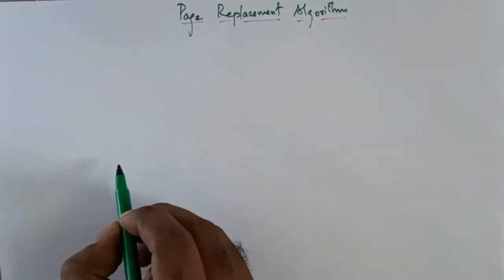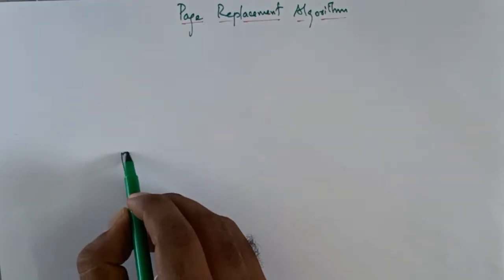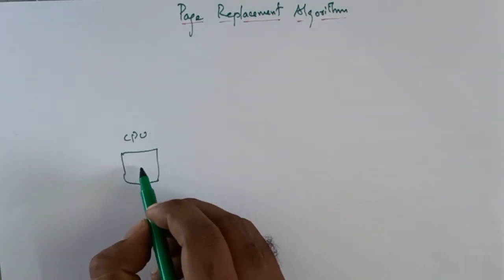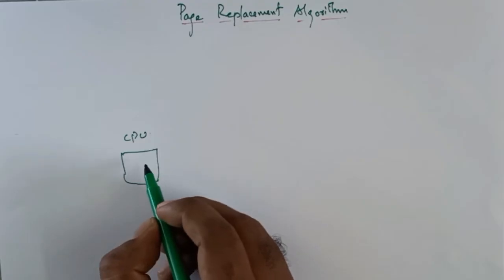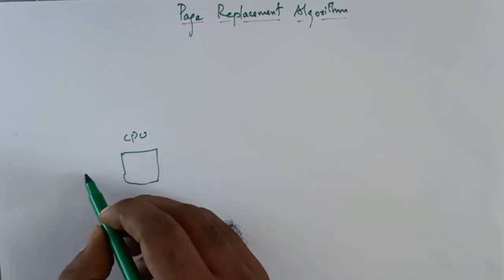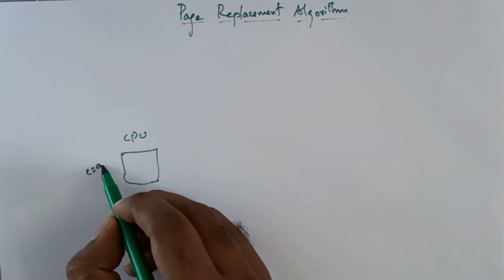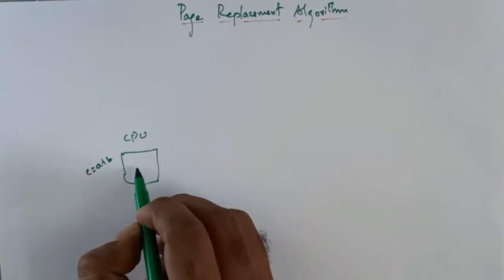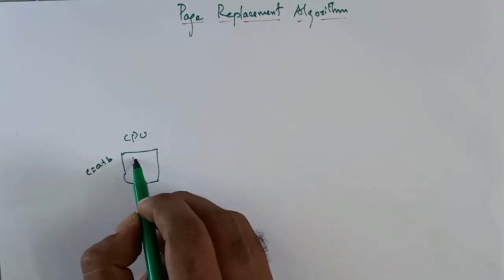Hi friends, in this video I am going to show you page replacement. This is a system, this is a processor, this is a calculation. For example, a simple C equal to A plus B. This is an arithmetic operation, this is a process, this is an IT processor.